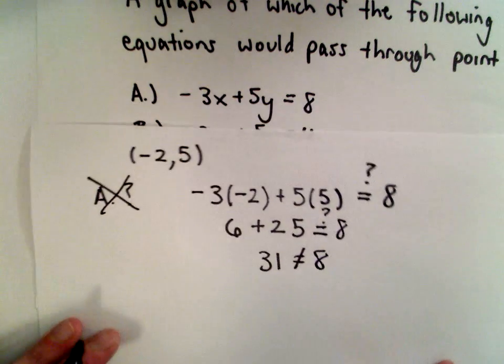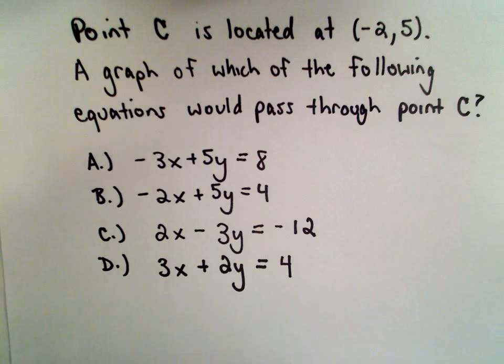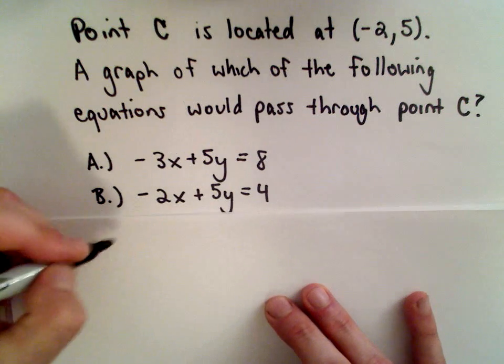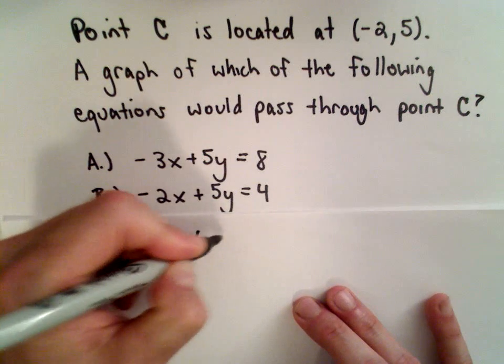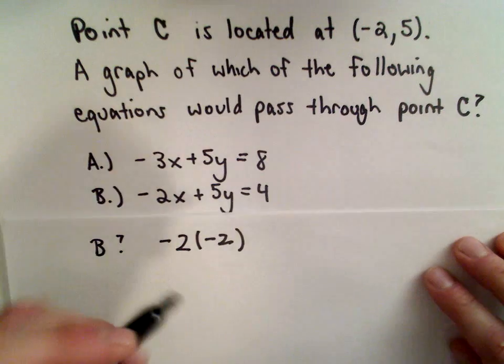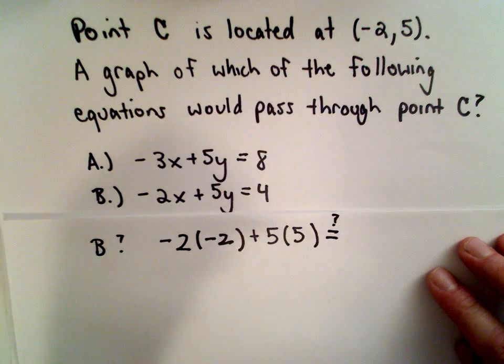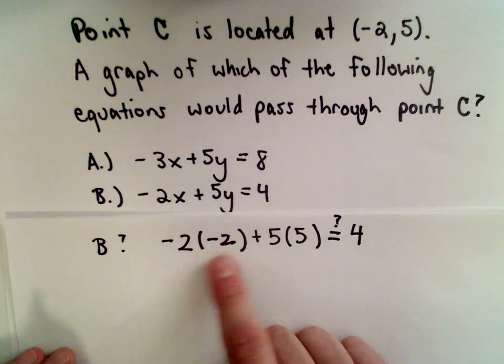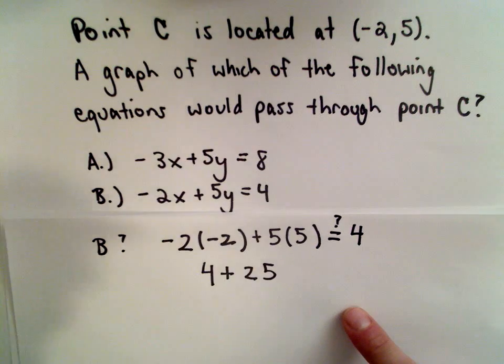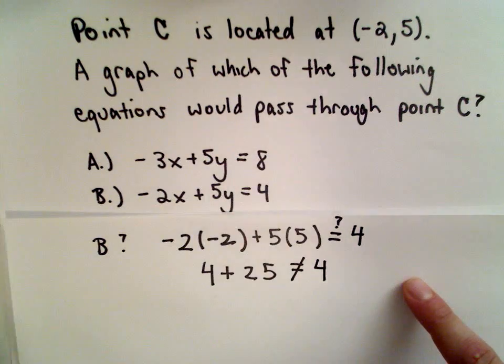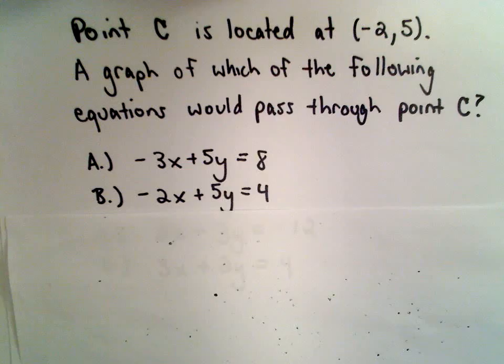This is what we're going to do for all of them, just kind of run through and check them. A tedious little problem, but it's okay. Let's see, does B work? Here we would have -2 multiplied by -2, that's my x value that I'm substituting in, plus 5 times 5. Does that equal positive 4? Well, -2 multiplied by -2, that's going to be positive 4. Plus 5 times 5, which we just saw is 25. That's definitely not going to add up to positive 4. So answer choice B isn't going to be a solution.